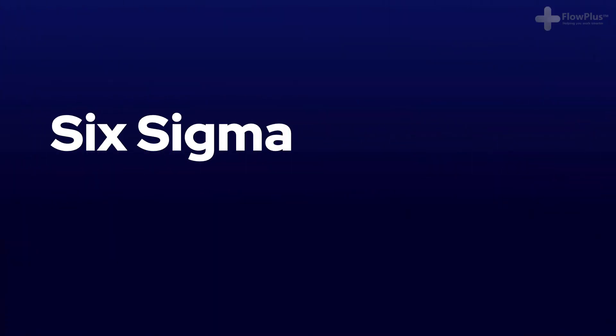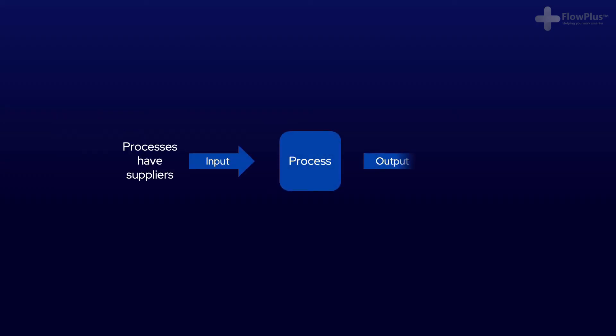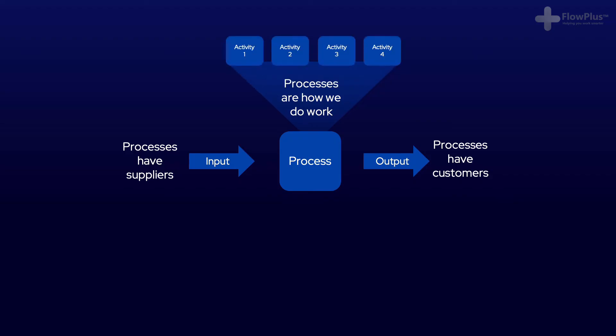So, what is Six Sigma? Six Sigma is all about processes. A process is a group of activities. The activities that make up a process are not random or ad hoc — they are related and follow an organised path.